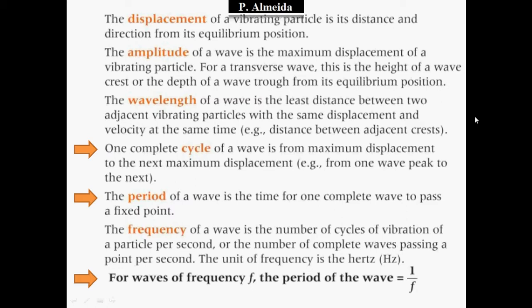The period of a wave is the time for one complete wave to pass through a fixed point. The frequency of a wave is the number of cycles of vibration per second, or the number of complete waves passing a point per second. The unit for frequency is Hertz, which is the same as one over second. Because frequency is the number of waves per second and period is the time for one complete wave, the period T equals one over frequency F.